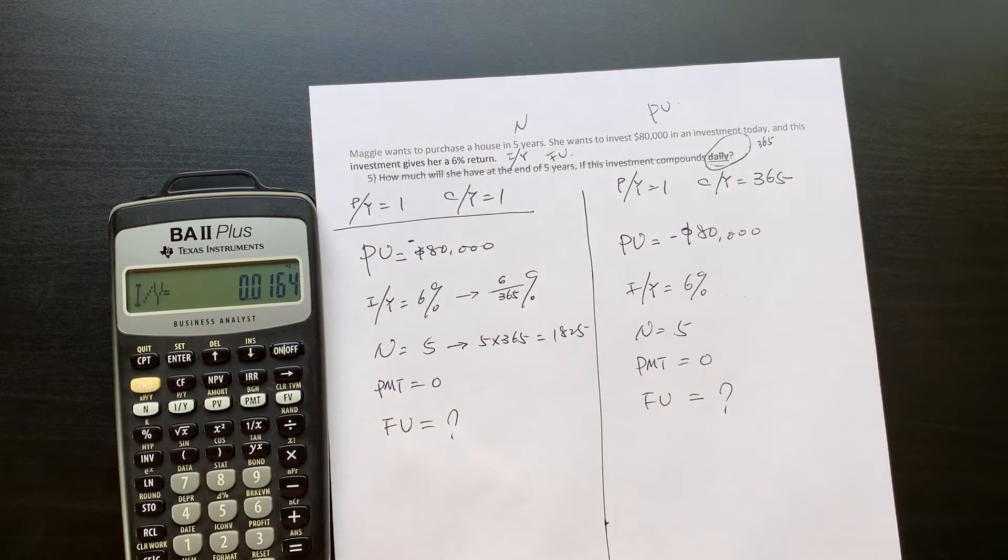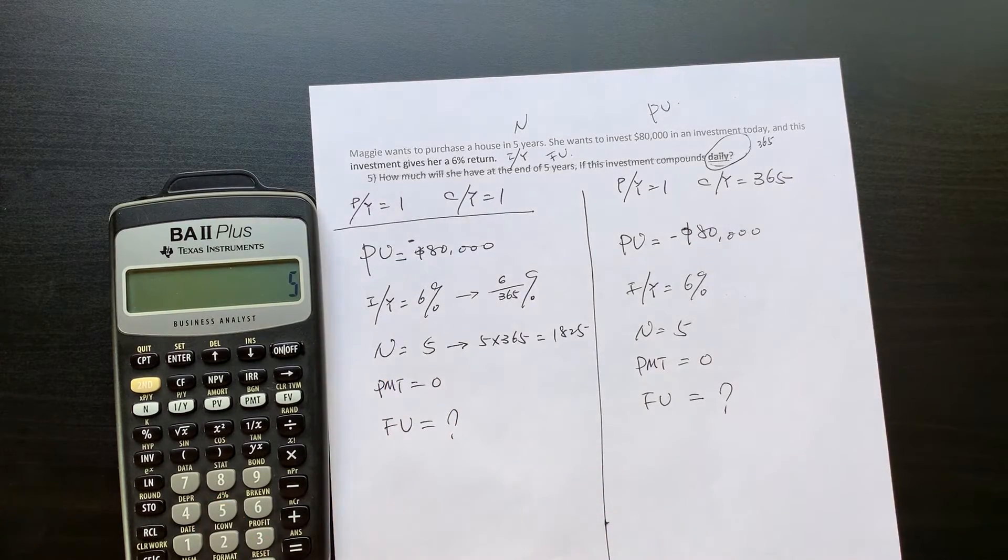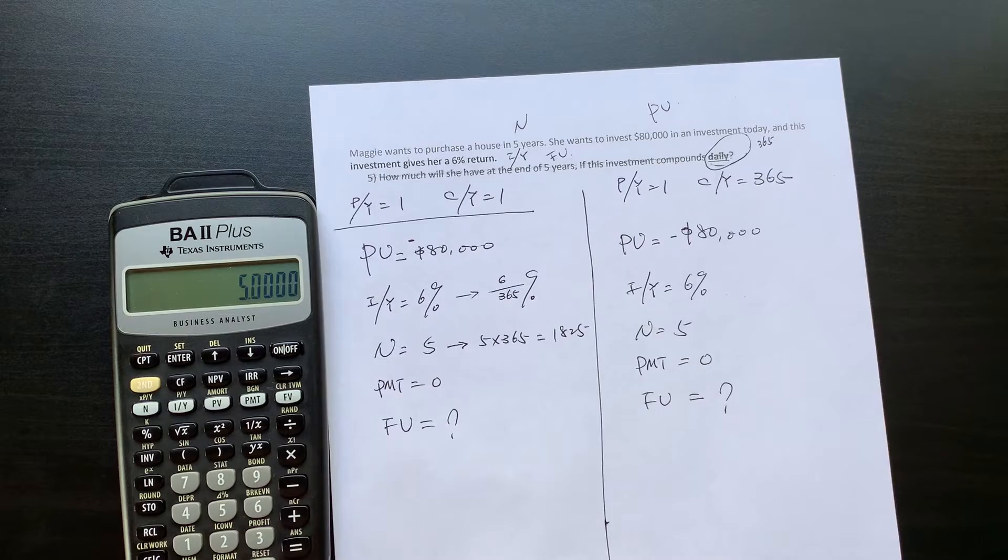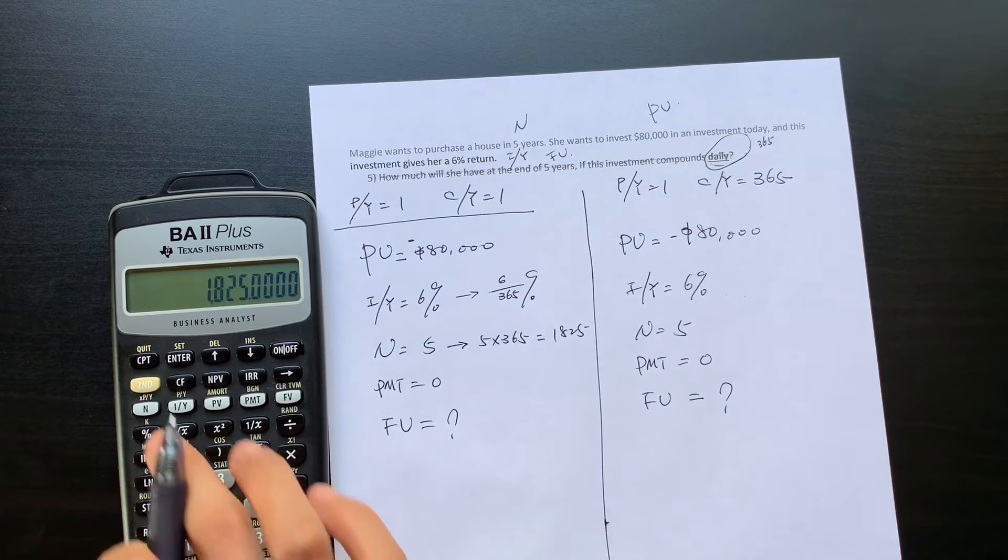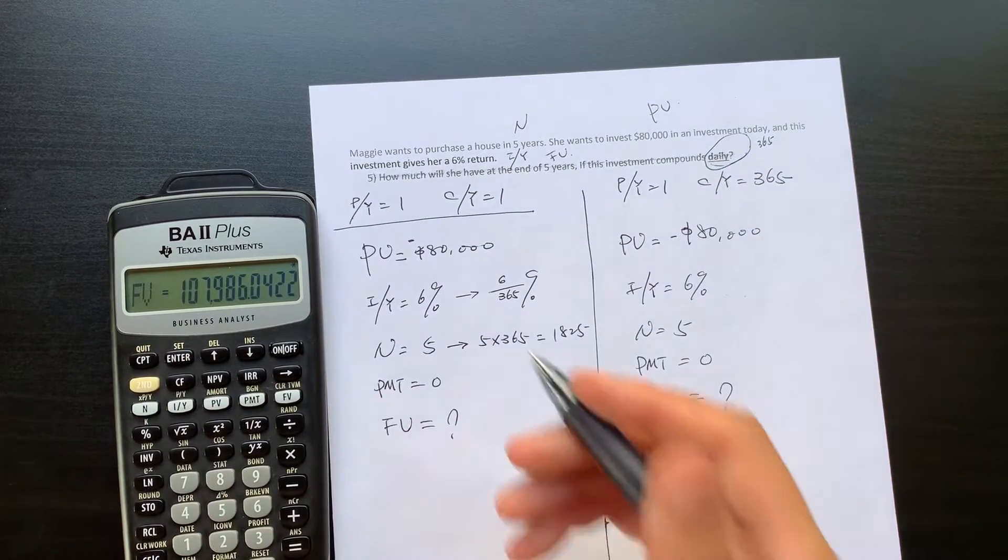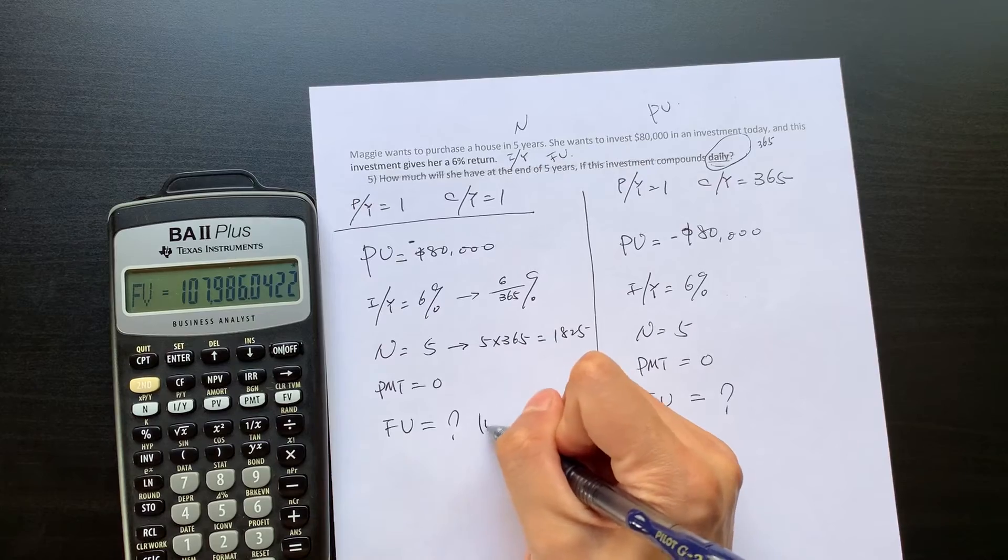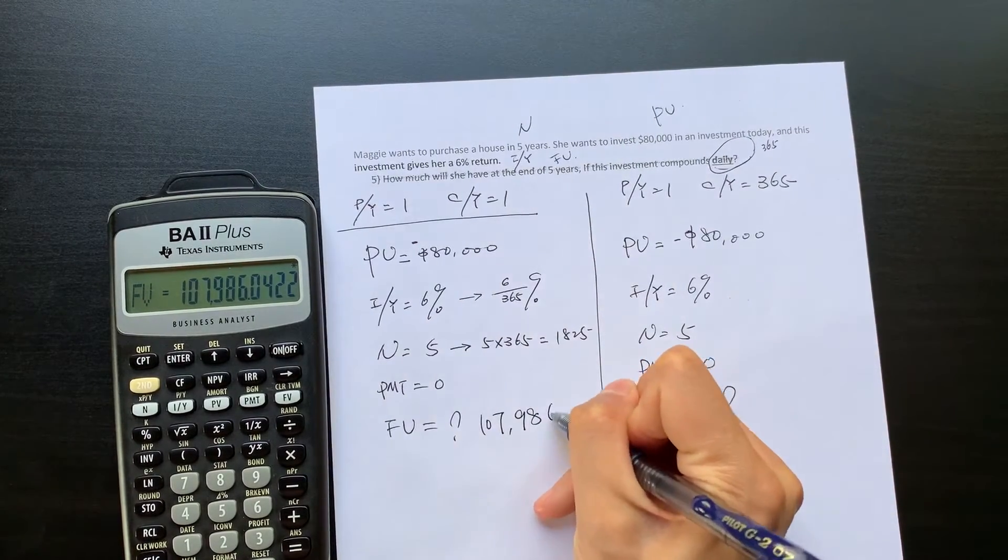And this is equal to this. And this is your interest rate. Then your N, number of the year, you have to compound at 365. This gives you this number. So it's your N. There is your PMT. We find that the future value is equal to 107,986.